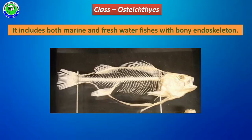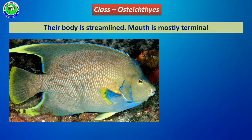The general characters of Osteichthyes: class Osteichthyes consists of many fishes that may grow in either marine or freshwater habitat. The presence of a bony endoskeleton is the fundamental character of all Osteichthyes members — the endoskeleton is made up of bone tissue.